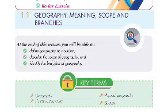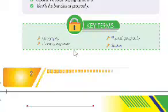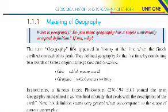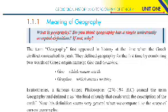Key terms for this section include: geography, human geography, and physical geography. Section 1.1.1: Meaning of Geography. What is geography? Do you think geography has a single universally accepted definition?